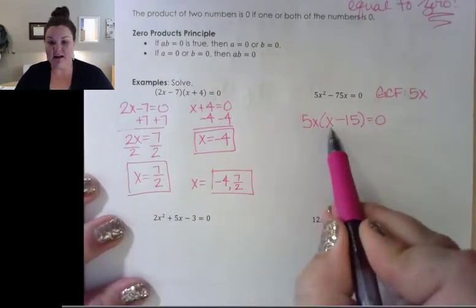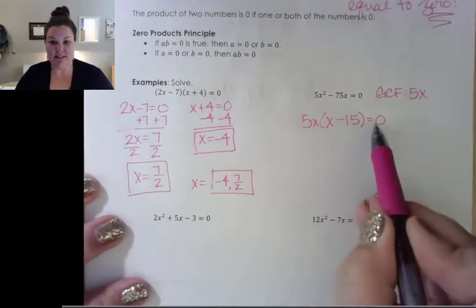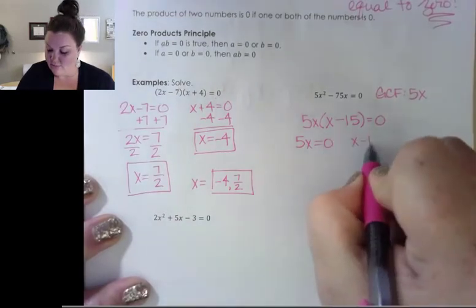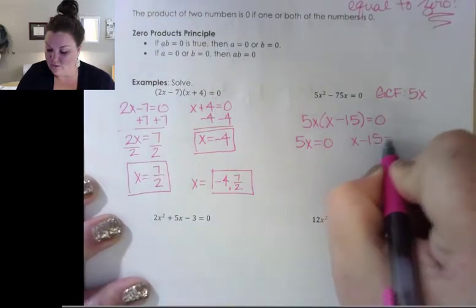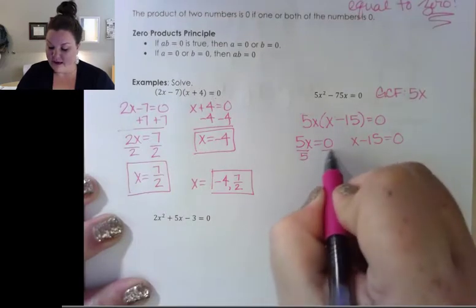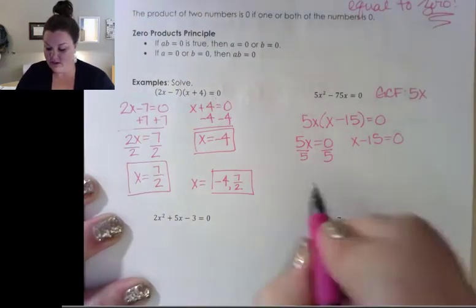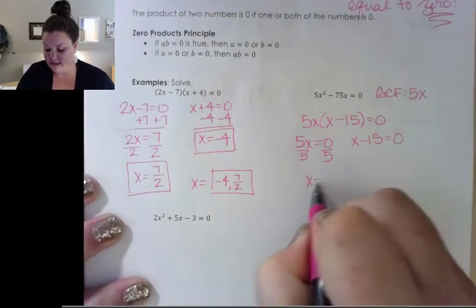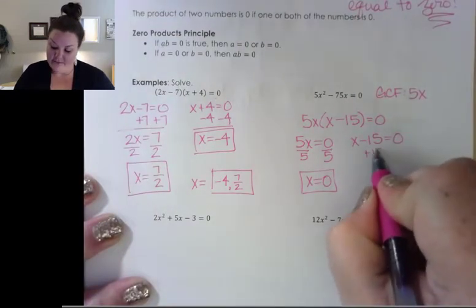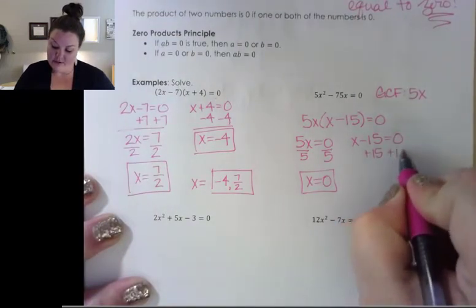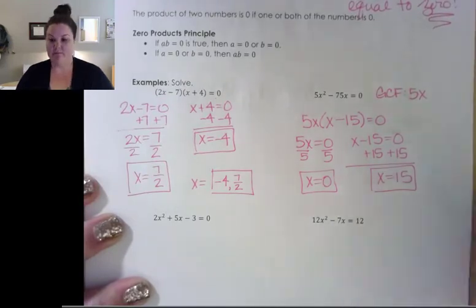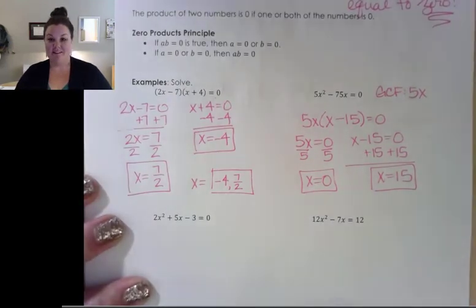Now that it's fully factored and equal to zero, I'm just going to set each factor equal to zero and solve. On the first one, I divide off the 5 to undo that multiplication, which gives me x equals zero. And on the second one, I'm going to add 15 to both sides, which gives me x equals 15.